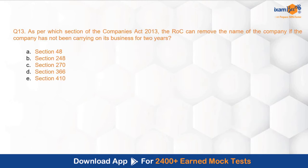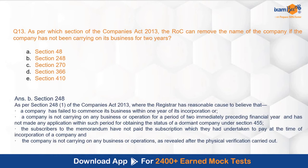The first question for today's discussion is: as per which section of the Companies Act 2013, can the ROC remove the name of a company if the company has not been carrying on its business for two years? This is a section-number-based question, so you need to be thorough with the important section numbers. The correct option is Section 248, and Section 248(1) lists the various grounds on which the ROC can remove a company's name, one of which is if the company has not been carrying on its business for two years.